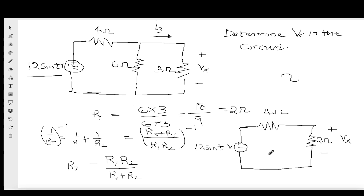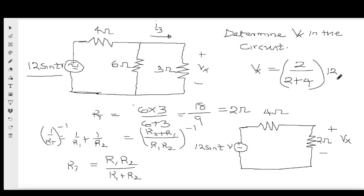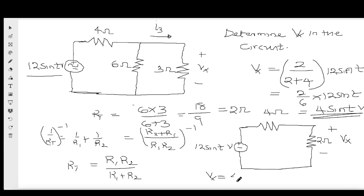Now applying the voltage division rule — 4Ω and 2Ω are in series, so the voltage is divided in the ratio of their resistances. Therefore Vx = 2/(2+4) × 12sin(t) = 2/6 × 12sin(t) = 4sin(t) volts. So Vx equals 4sin(t) volts. That is very straightforward.